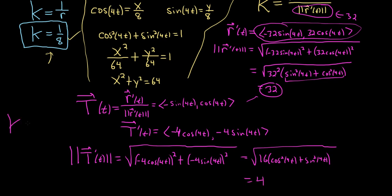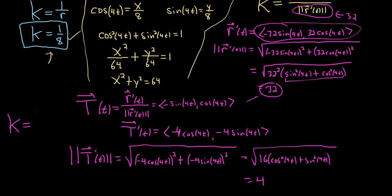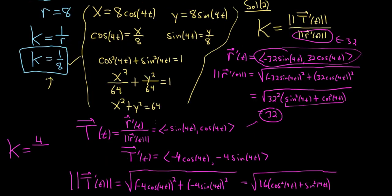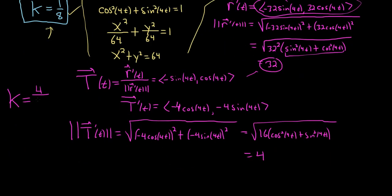So K. What is K? Let's go back up. So it's going to be the magnitude of the derivative, which we know is 4. OK. So that goes up top. Moment of truth. And the bottom is the magnitude of the derivative of R. So that's 32. Oh, look at that. It's also 1 over 8.